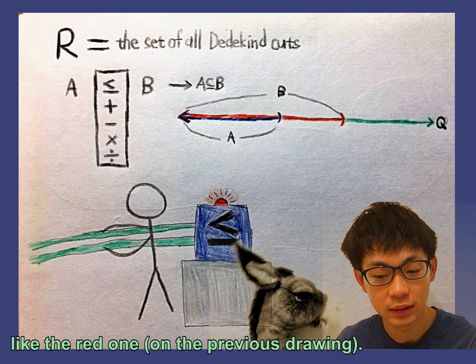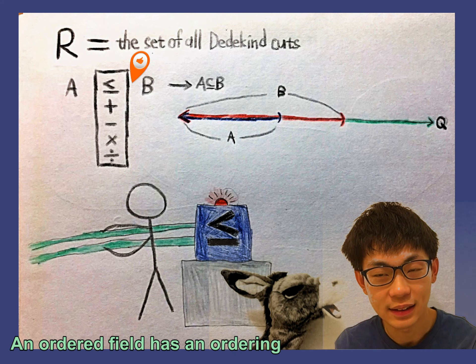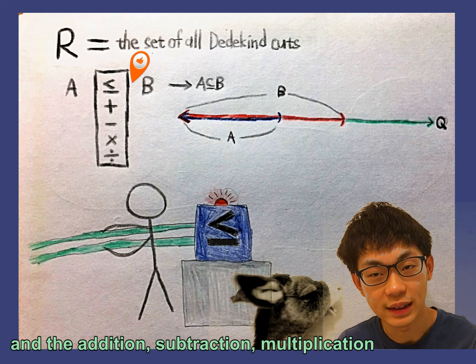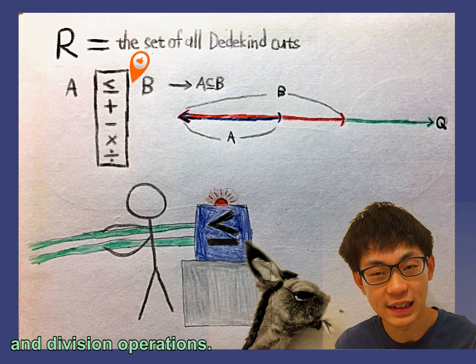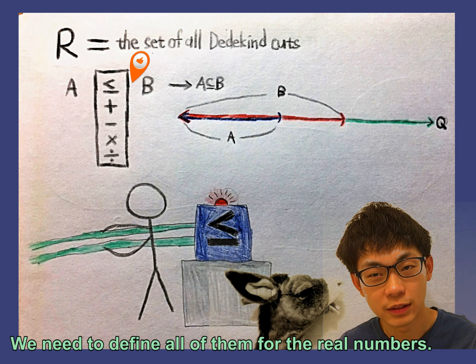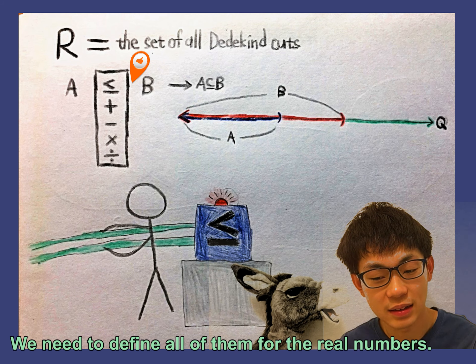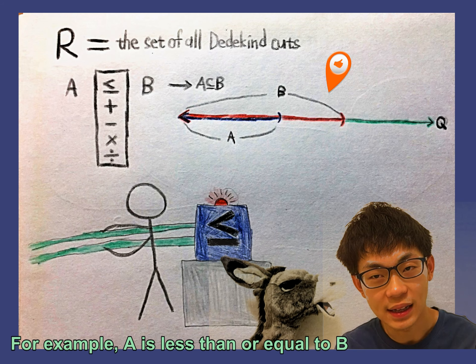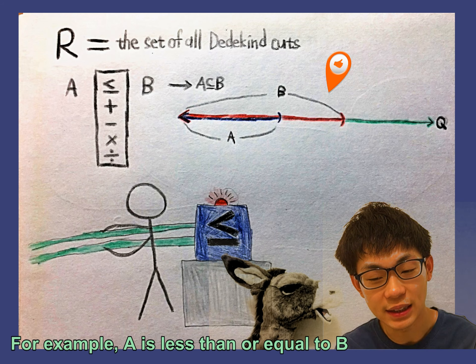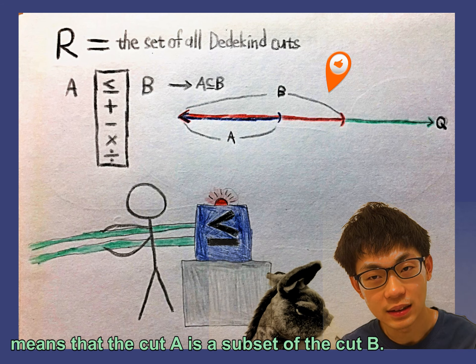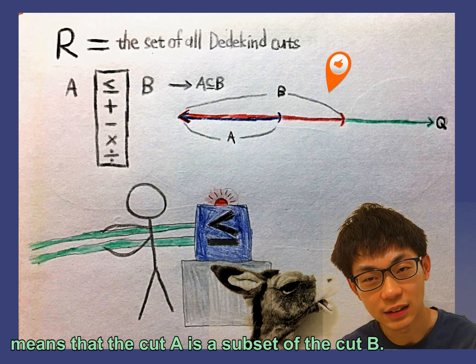An ordered field has an ordering and the addition, subtraction, multiplication, and division operations. We need to define all of them for the real numbers. For example, A is less than or equal to B means that the cut A is a subset of the cut B.